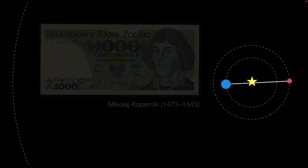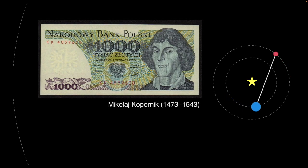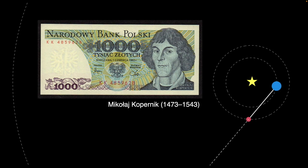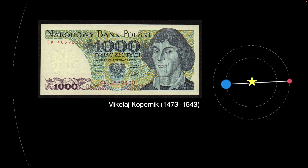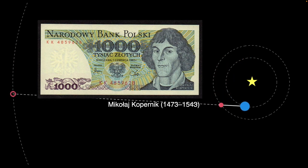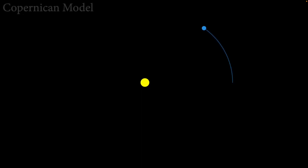Nicholas Copernicus decided that another way to explain retrograde motion is by putting the Sun at the center of the solar system — the heliocentric model. The thing not often appreciated about Copernicus's model is that it still uses epicycles.